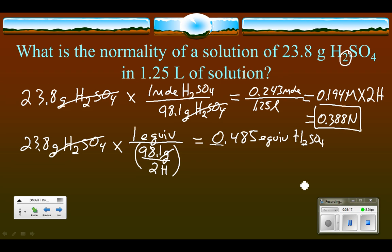So then we just take that number, the number of equivalents, and divide it by the volume, which is 1.25 liters. So when you do that division, you're going to find that you get exactly the same answer. And that's capital N, equivalents per liter.